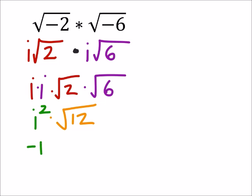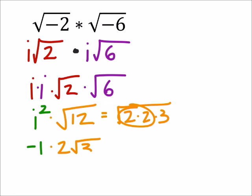i squared is a negative 1, and this would be multiplied by 12 is the same as 2 times 2 times 3. So I've got a pair of 2's here, meaning I can pull it out of the square root. So that gives me 2 times the square root of 3, making this a negative 2 times the square root of 3.